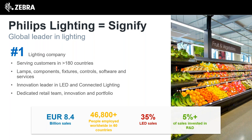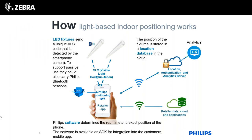As a side benefit of LED, you have the opportunity to do applications like VLC. When you install LED lighting, you have the option - it's not a standard feature, it's optional - to have a number of the lights flickering at a very high intensity. You can't actually see it flickering with your naked eye, but if you use a camera on a smartphone or one of the Zebra devices, you can capture a video stream and decode the pattern of the lights dynamically. That allows you to have an ID for each light, which is programmed to transmit a location code.